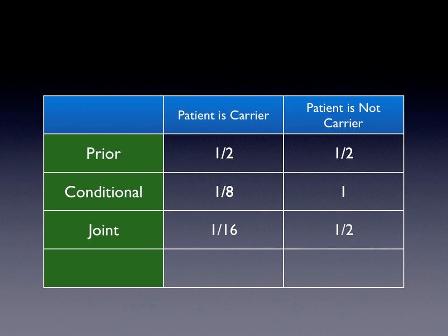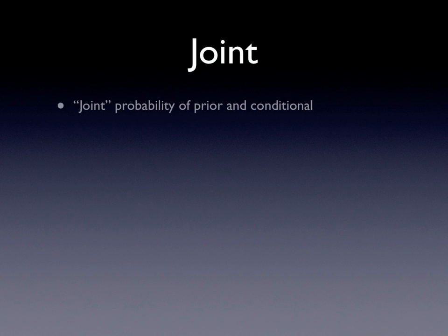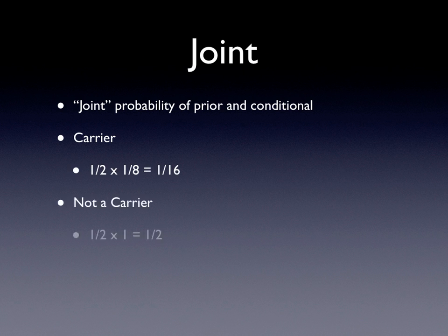On to the joint. Basically, you join the probability of prior and conditional by multiplying. Here's our prior and conditional — we multiply. One-half times one-eighth is one-sixteenth. One-half times one is one-half.